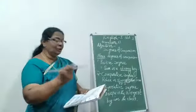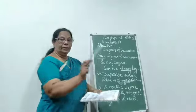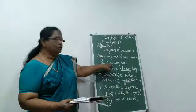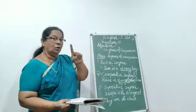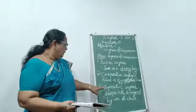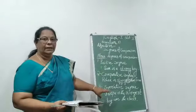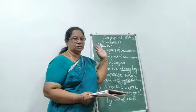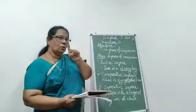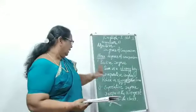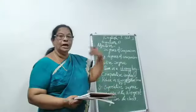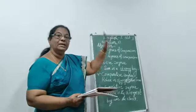Now coming to the third — superlative degree. In the positive degree, how many persons are there? Only one. In comparative forms, how many persons or things? Two. Coming to the superlative degree, it involves more than two persons. Positive degree — only one person or one thing. Comparative — two persons or two things. Superlative — more than two; that means any number it can be.